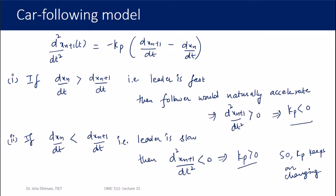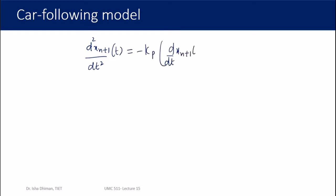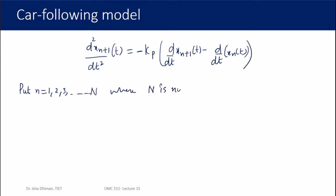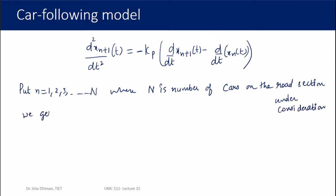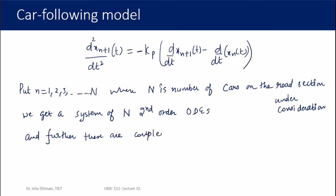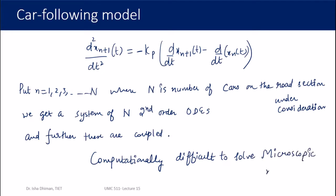This equation contains n. By putting n = 1, 2, 3, …, N (where N is the total number of vehicles on the road section), we get a system of N second-order ordinary differential equations. Furthermore, these equations are coupled, making the system computationally challenging to solve.